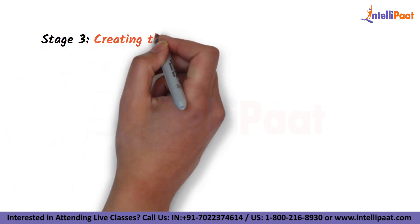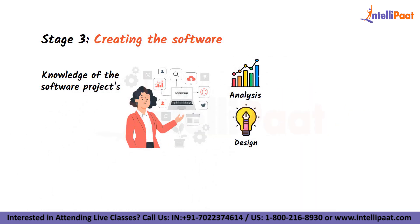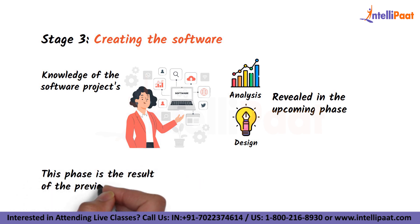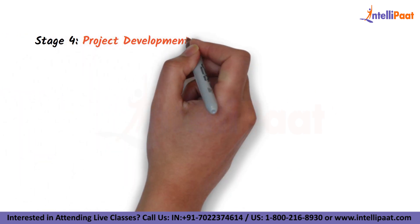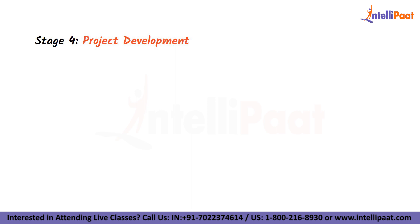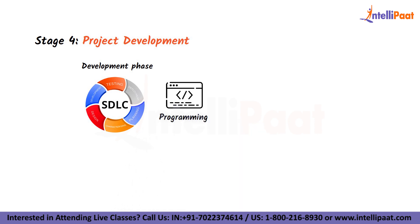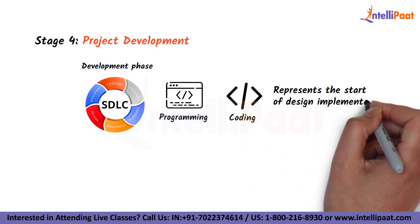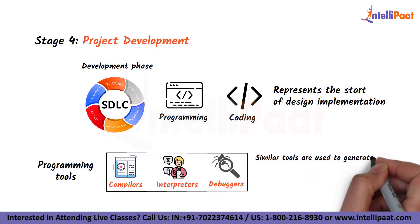The third stage is called creating the software. The knowledge of the software project's needs, analysis and design will all be revealed in this phase. This phase is the result of the previous two stages such as requirement analysis and specifying the needs. The fourth stage is called project development. The actual development phase of the SDLC starts here and programming is created from scratch. Coding represents the start of design implementation. Programming tools include compilers, interpreters, debuggers and other similar tools used to generate and implement the code.